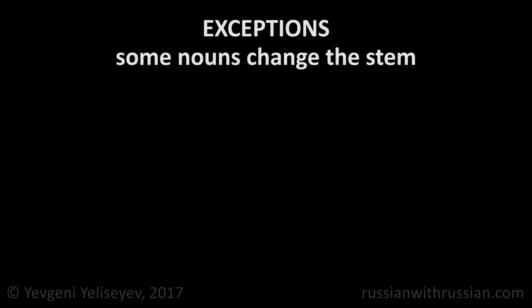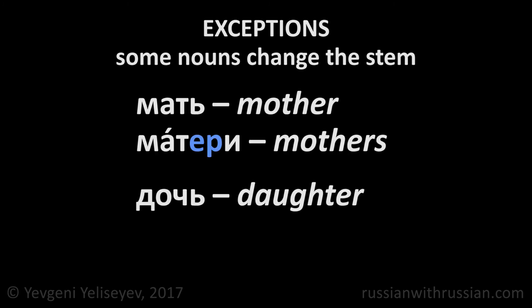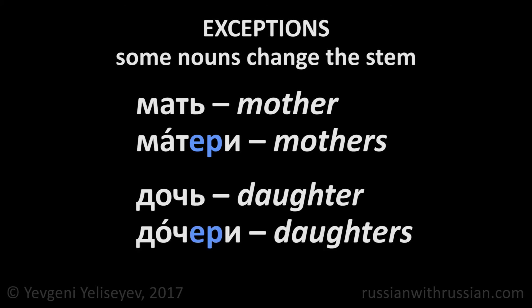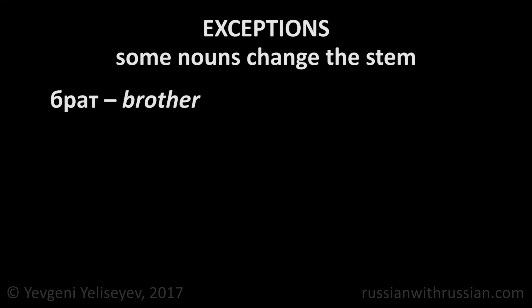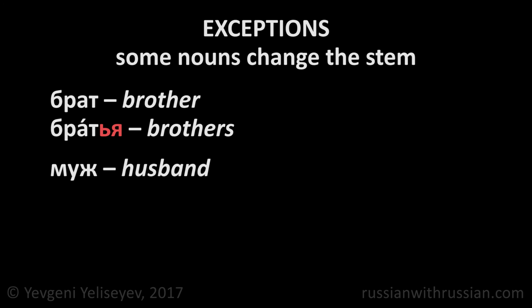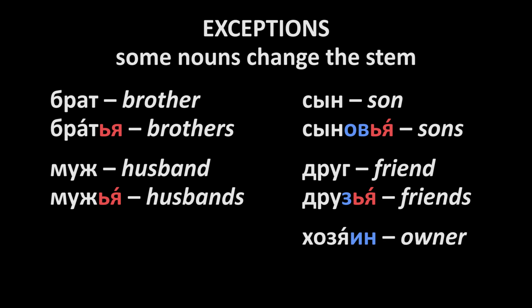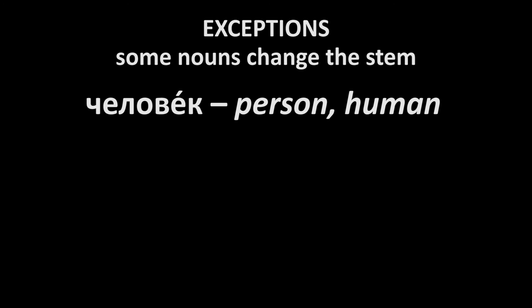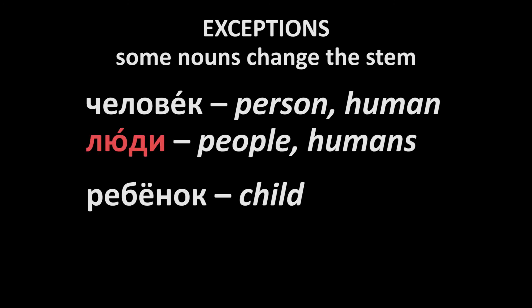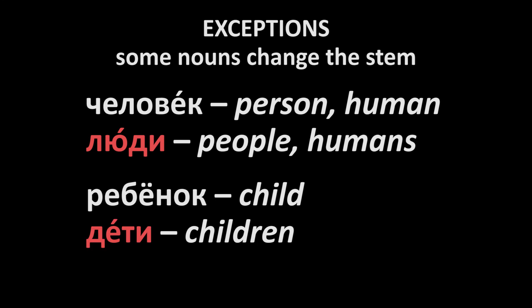And some nouns change the stem. The most common are: мать — mother, матери; дочь — daughter, дочери; брат — brother, братья; муж — husband, мужья; сын — son, сыновья; друг — friend, друзья; хозяин — owner, хозяева; человек — person/human, люди — people; ребёнок — child, дети — children.